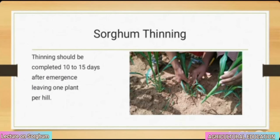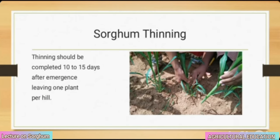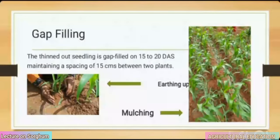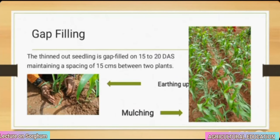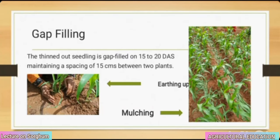Sorghum thinning: thinning should be completed 10 to 15 days after emergence, leaving one plant per hill. Gap filling: the thinned-out seedlings are used for gap filling 15 to 20 days after sowing, maintaining a spacing of 15 cm between two plants.